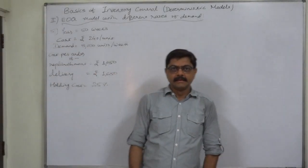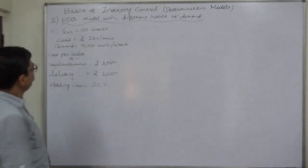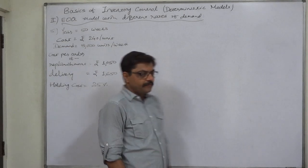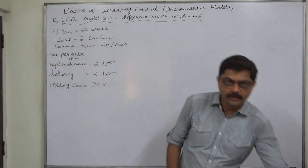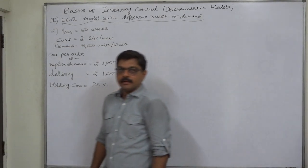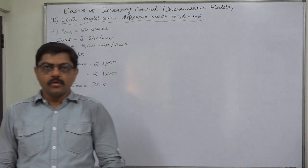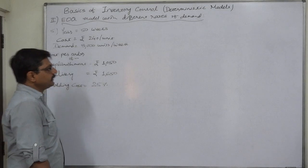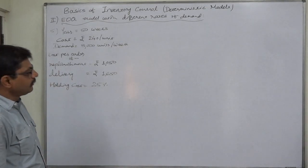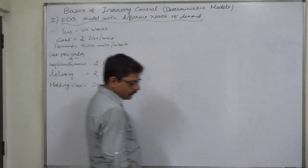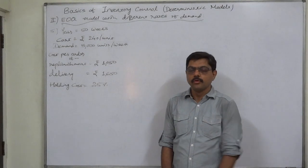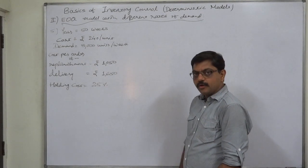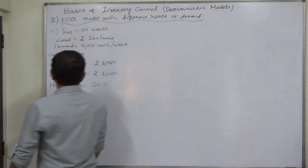Hello friends, now the topic is EOQ model with different rates of demand. That means instead of annual demand, we will have information about weekly, monthly, quarterly, or half-yearly demand. We just have to find out the yearly demand because our formula for calculation of EOQ or TVC needs the yearly or annual demand.